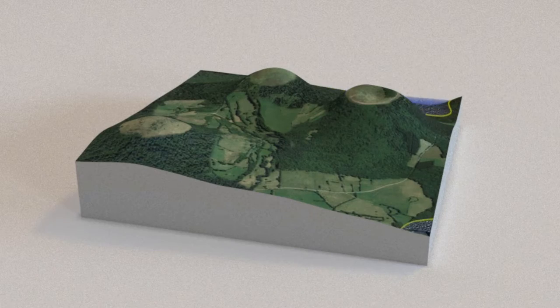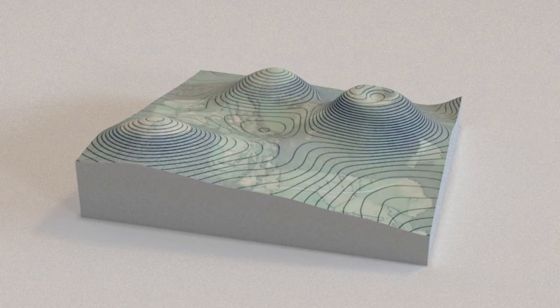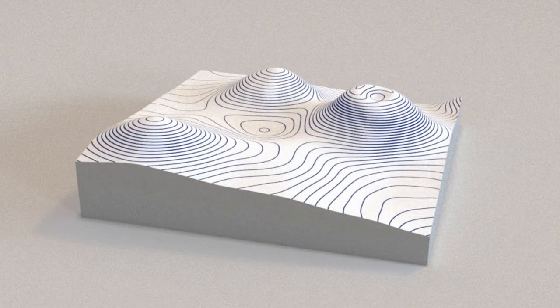Level curves are also called counter lines, probably because they tend to close up. On a counter line, the altitude is constant.